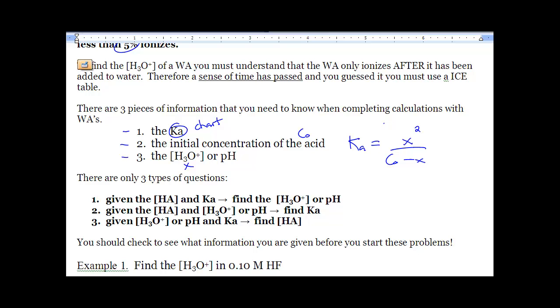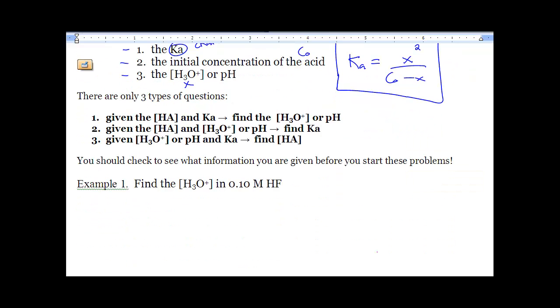This is that little formula. You're going to be given two out of the three parts and you need to solve for the unknown. In my first question you're solving for X and you're given C naught. You're also given Ka which will be on your chart. The Ka will be 3.5 times 10 to the negative 4.